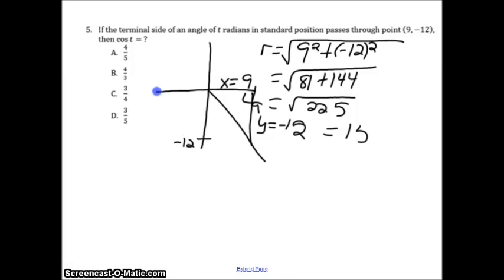Which is equal to 15. All right, so r is 15. Cosine is x over r, which would be 9 over 15. And I can take a 3 out of top and bottom to get 3 over 5.